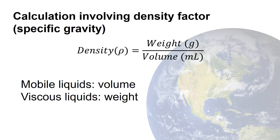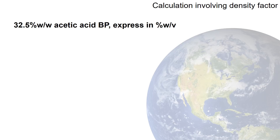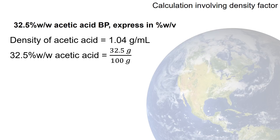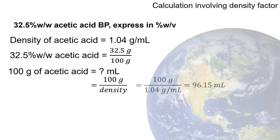Let's look at an example where you have to express acetic acid in the form of percentage weight per volume from percentage weight in weight. We need the density factor: the density of acetic acid is 1.04 g/ml. Since 32.5% w/w means 32.5 grams in 100 grams, we convert the 100 grams into volume by dividing by the density, giving 100 ÷ 1.04 = 96.15 ml.